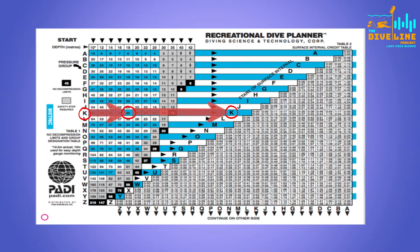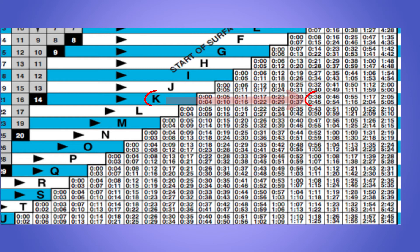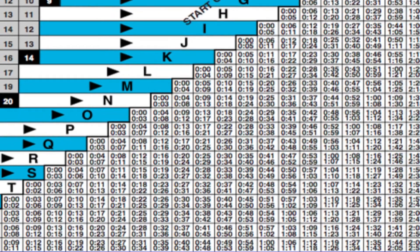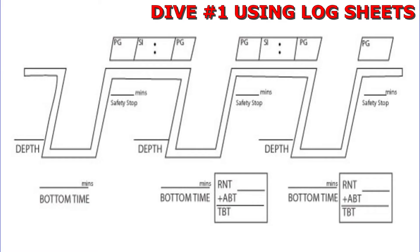Let's say we spent 45 minutes on our surface interval — the amount of time between the two dives. If you read along from left to right on that K line, you'll find 45 minutes and then read down. This will give you pressure group E. So this is still residual nitrogen that's in our system, but it is reduced from when we first got out. Dive number one, we went to a depth of 18 metres for a bottom time of 30 minutes, which gave us pressure group K. After a surface interval of 45 minutes, we ended up in pressure group E.